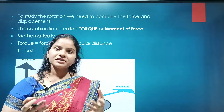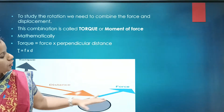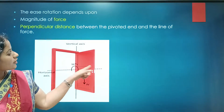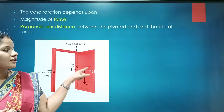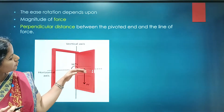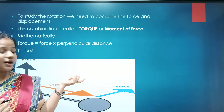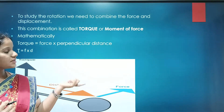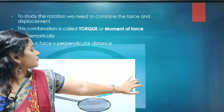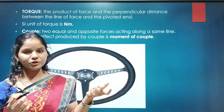Torque can also be called the moment of force. It is the product of force and the perpendicular distance. If you apply force where the distance is more, the torque produced will be less. When force is applied where the distance is less, the torque will be more. The SI unit of force is Newton and distance is meter, therefore the SI unit of torque is Newton meters.